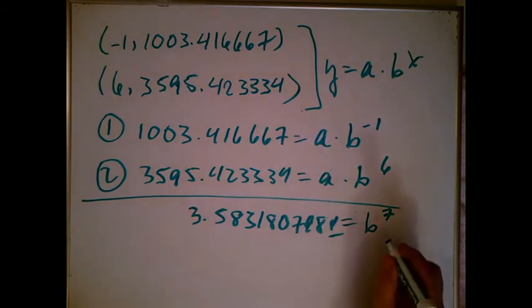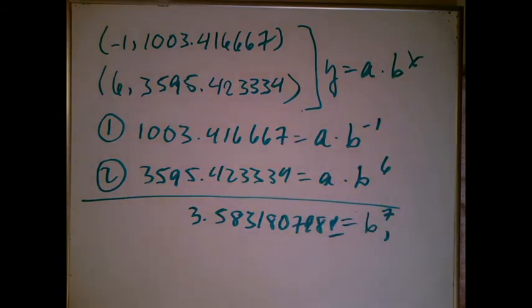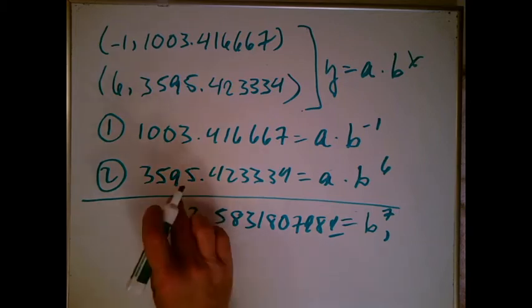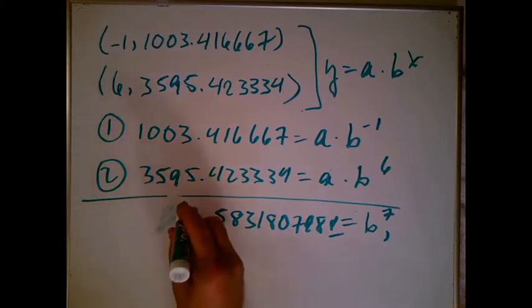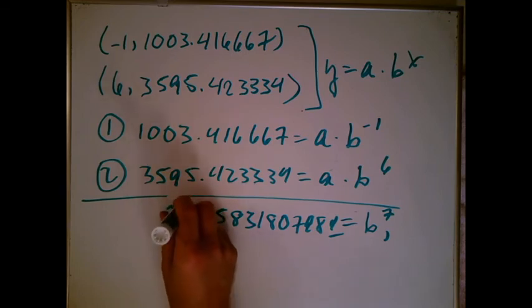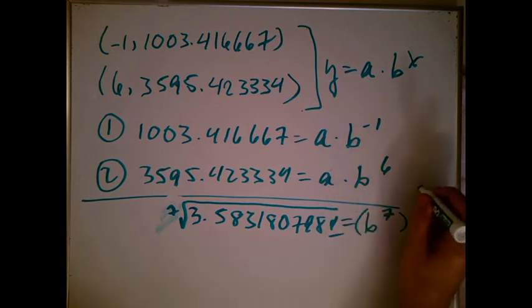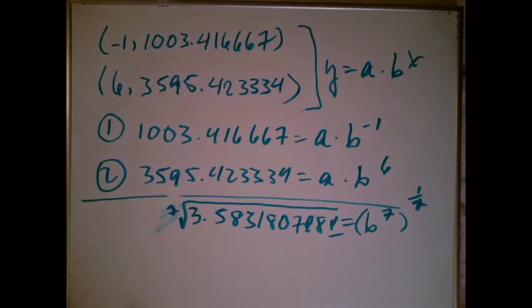Now I'm supposed to solve for b. So I need to take the seventh root of both sides. So let's take the seventh root. Remember, taking the seventh root is raising to the one-seventh. And I'm going to let my calculator give me the answer again. I'm thinking I should get one point something.